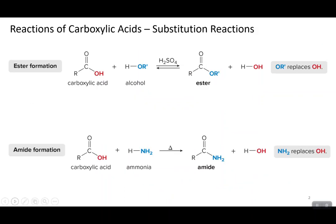We are looking at reactions of carboxylic acids. When we talked about ester formation, we talked about these being substitution reactions, because this OH on your carboxylic acid is being replaced with, in the case of ester formation, an oxygen-containing group, and that's what forms your ester product. With amide formation, we're still going to replace this OH group — that's why it's still a substitution reaction — but we're substituting it with a nitrogen-containing compound, and that is what's going to result in our amide product.